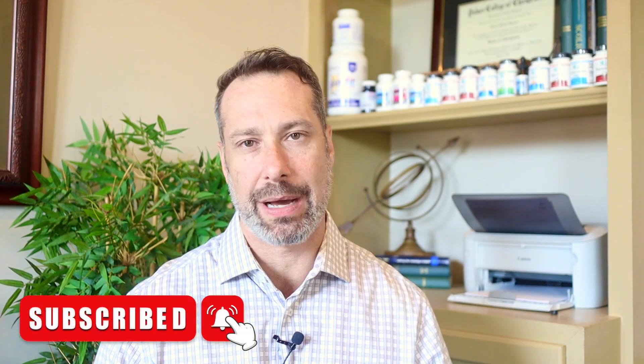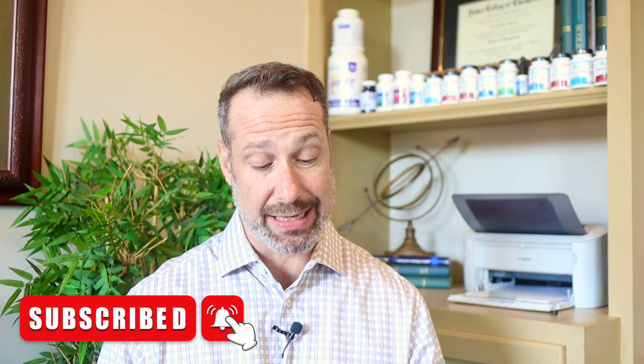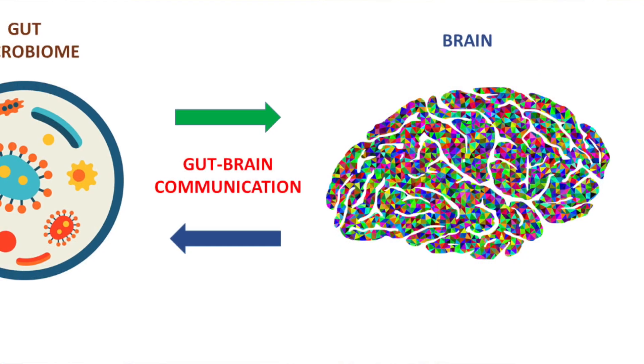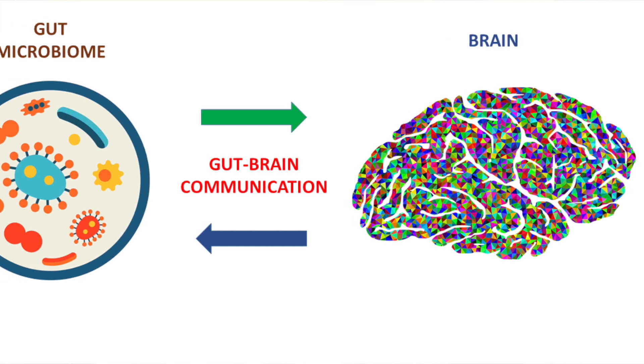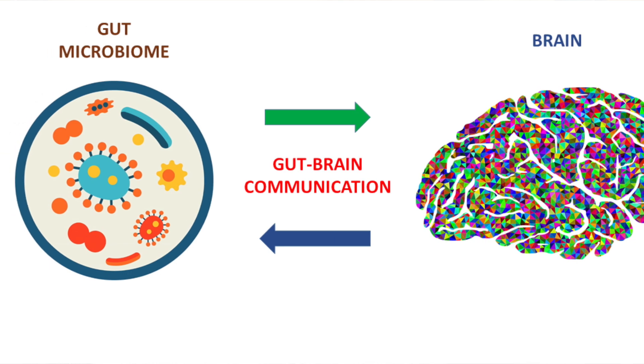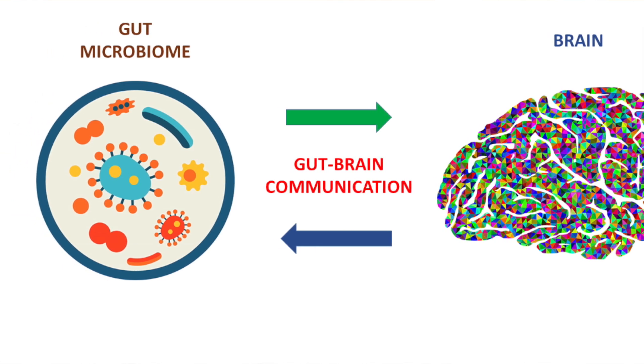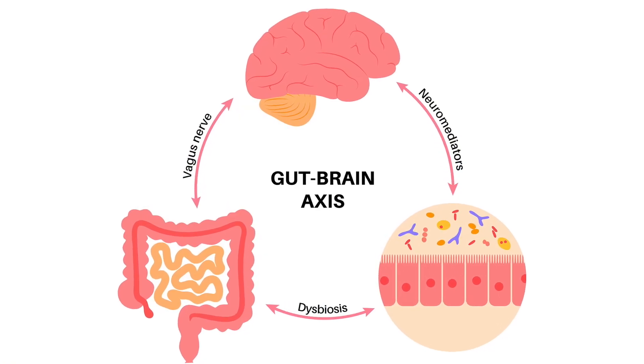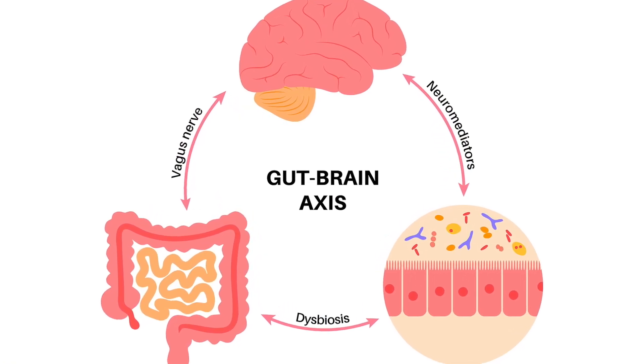Histamine also influences the gut-brain axis, affecting gut motility and permeability. Gastrointestinal issues like dysbiosis — gut bacterial imbalances — can actually increase the release of histamine and the absorption of histamine into the bloodstream, potentially reaching the brain and triggering a migraine. This is why the gut is such an important area for people who have migraines and histamine intolerance.